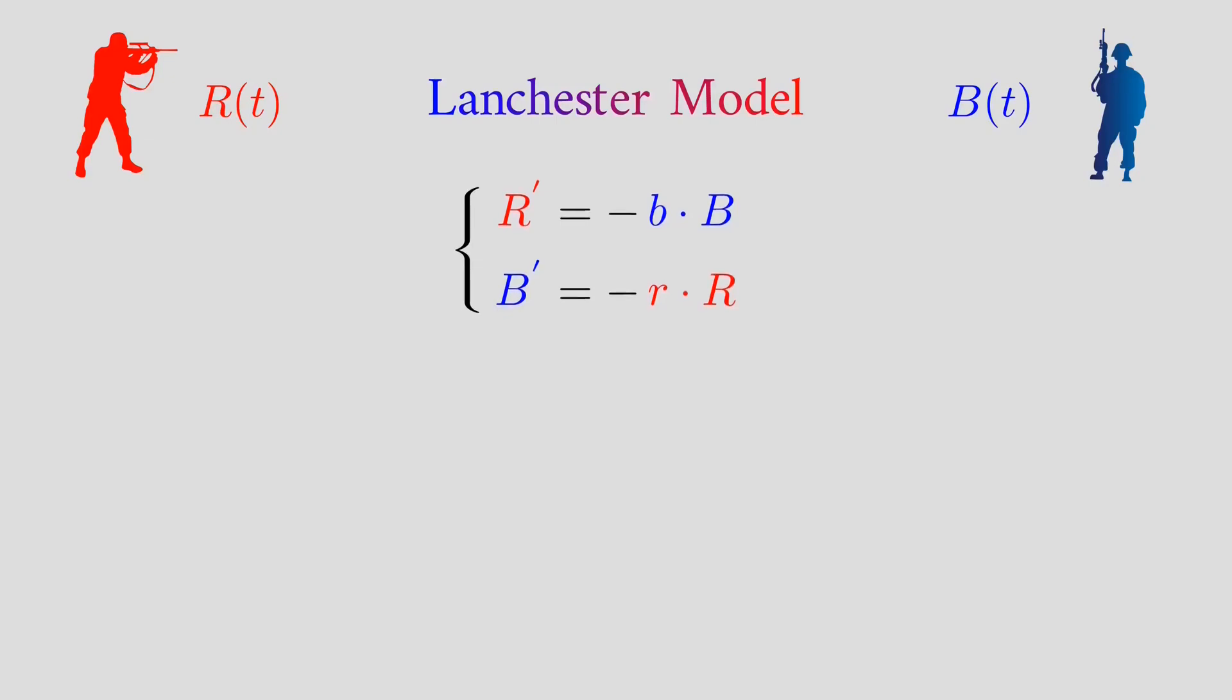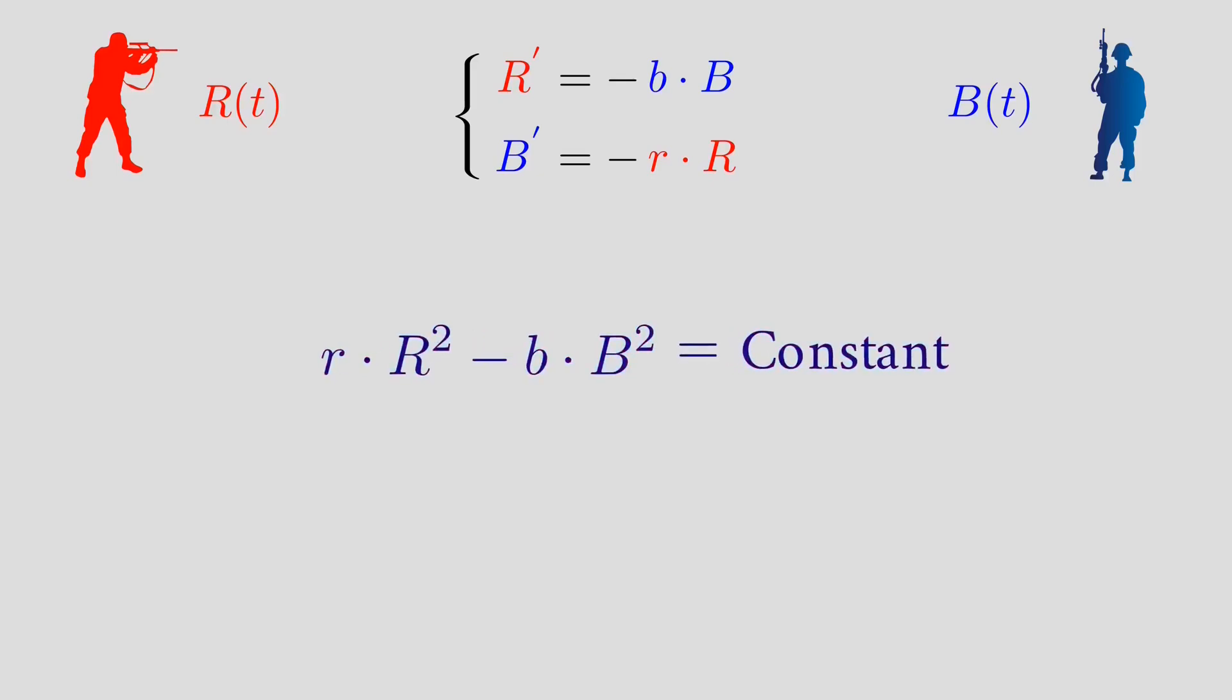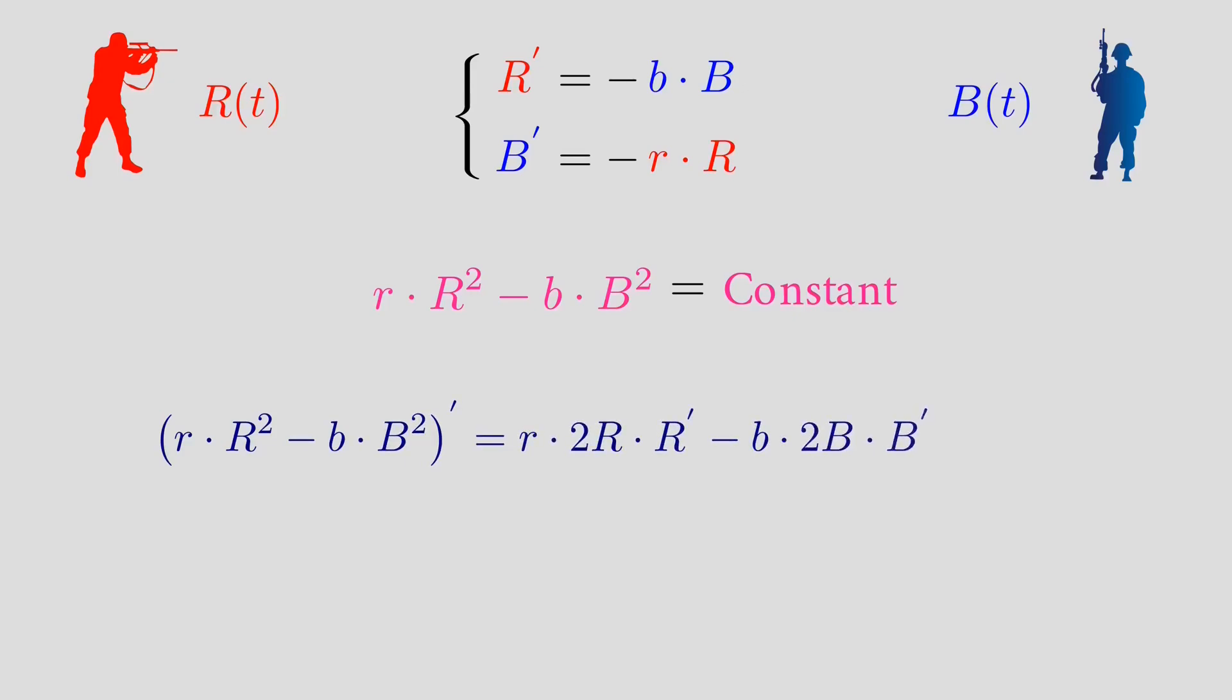One of the basic results concerning this model is the Lanchester square law, which states that the following expression remains constant for all t. How do we show that? Well, it's a function. So it suffices to prove that its derivative is zero. We differentiate and replace the derivative from the model and voila.